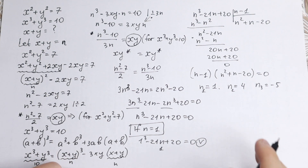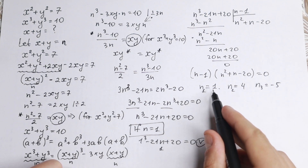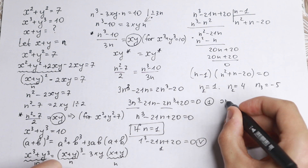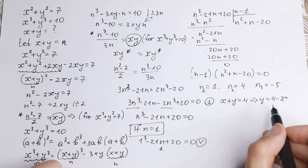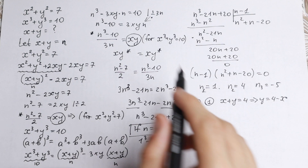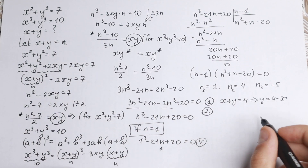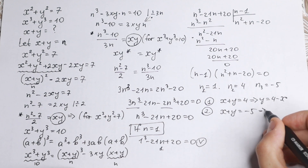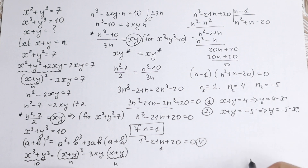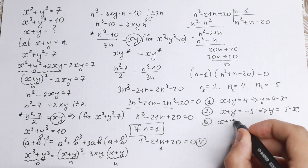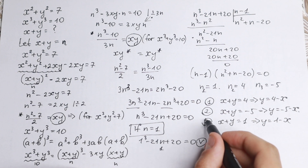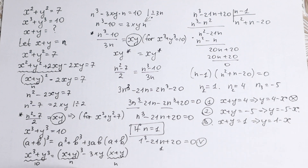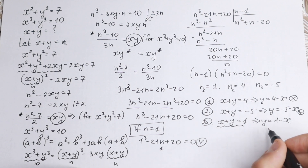We need to check all three combinations. For n equals 4, x plus y equals 4 so y equals 4 minus x. For n equals minus 5, x plus y equals minus 5 so y equals minus 5 minus x. For n equals 1, x plus y equals 1 so y equals 1 minus x. There will be no real solution in the first two cases.